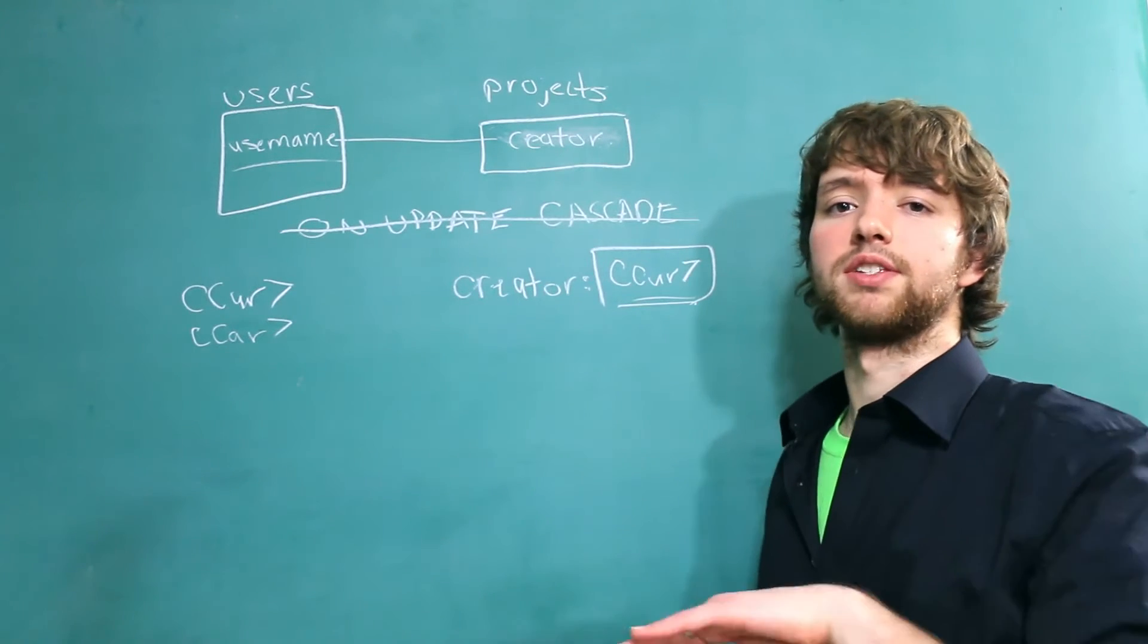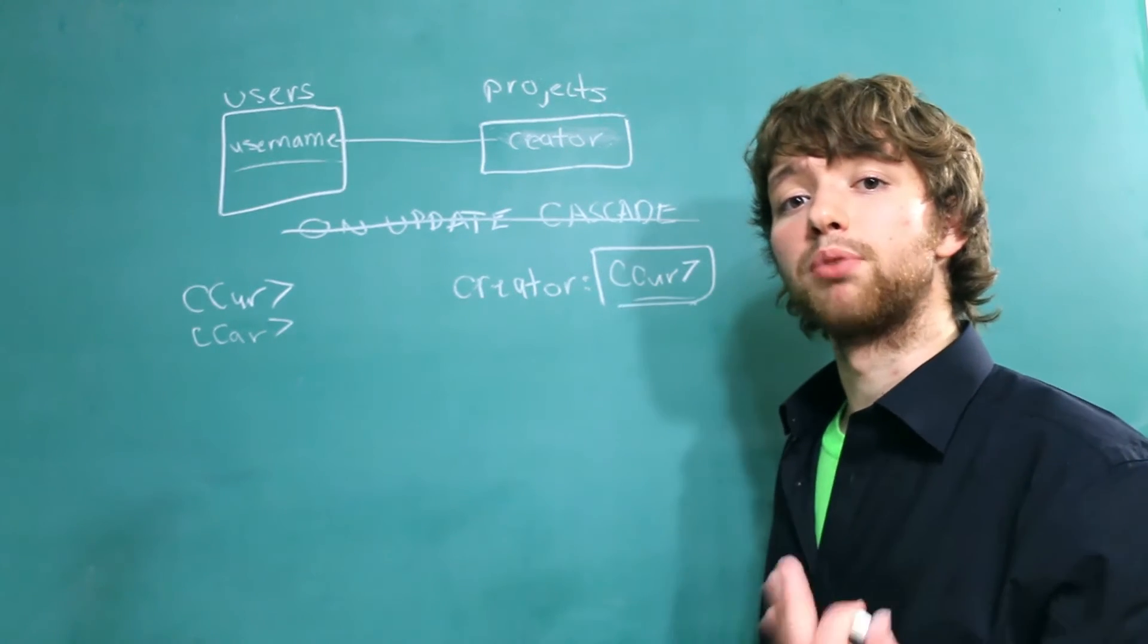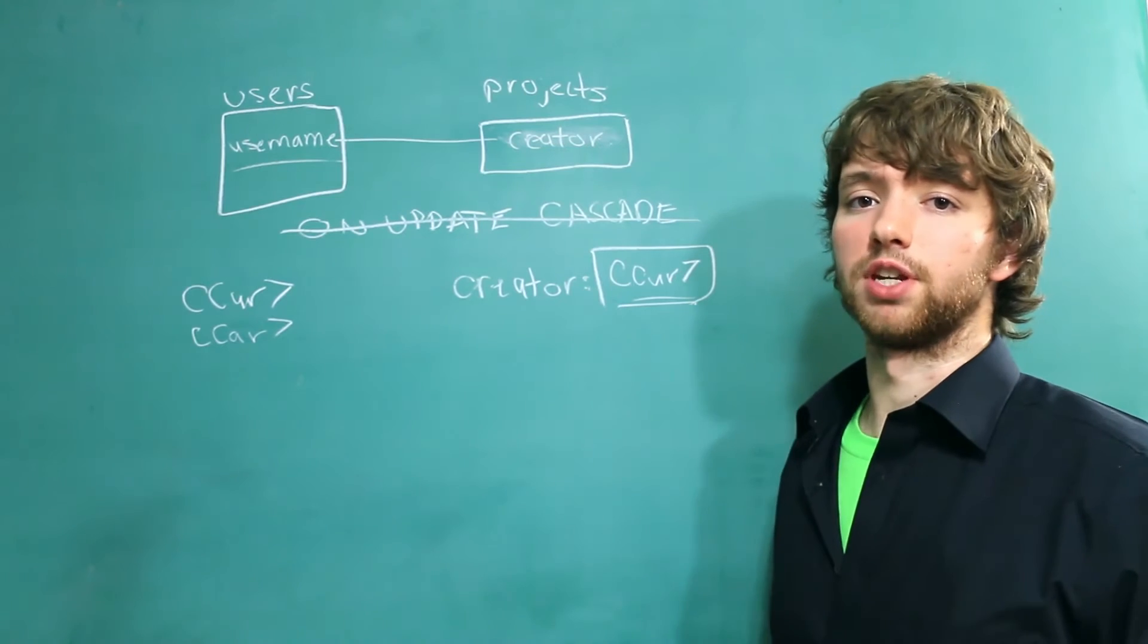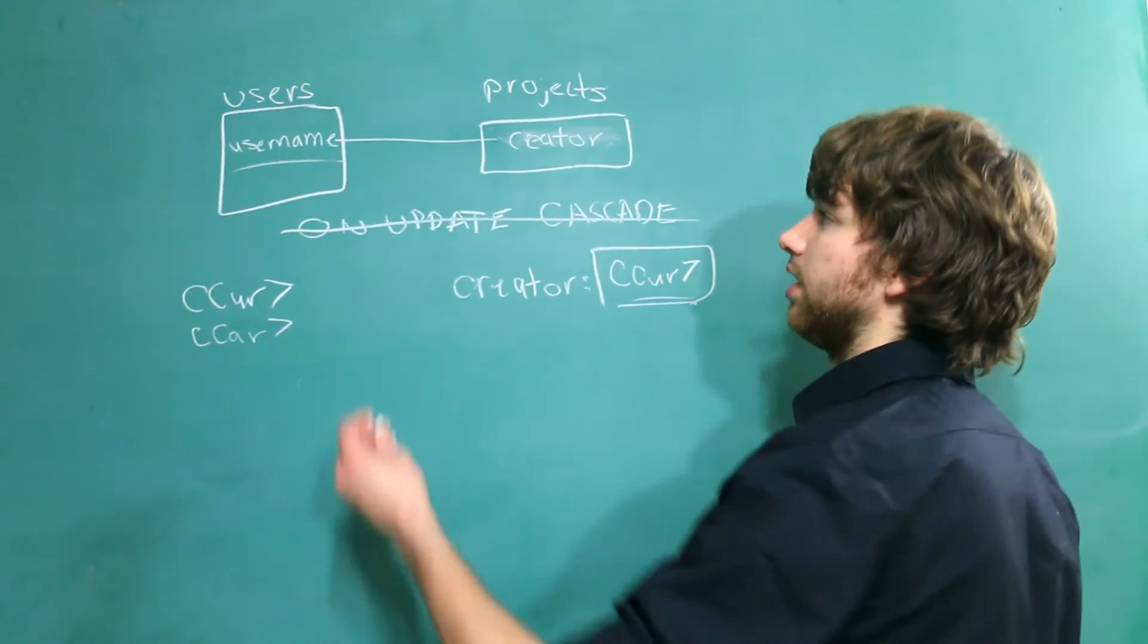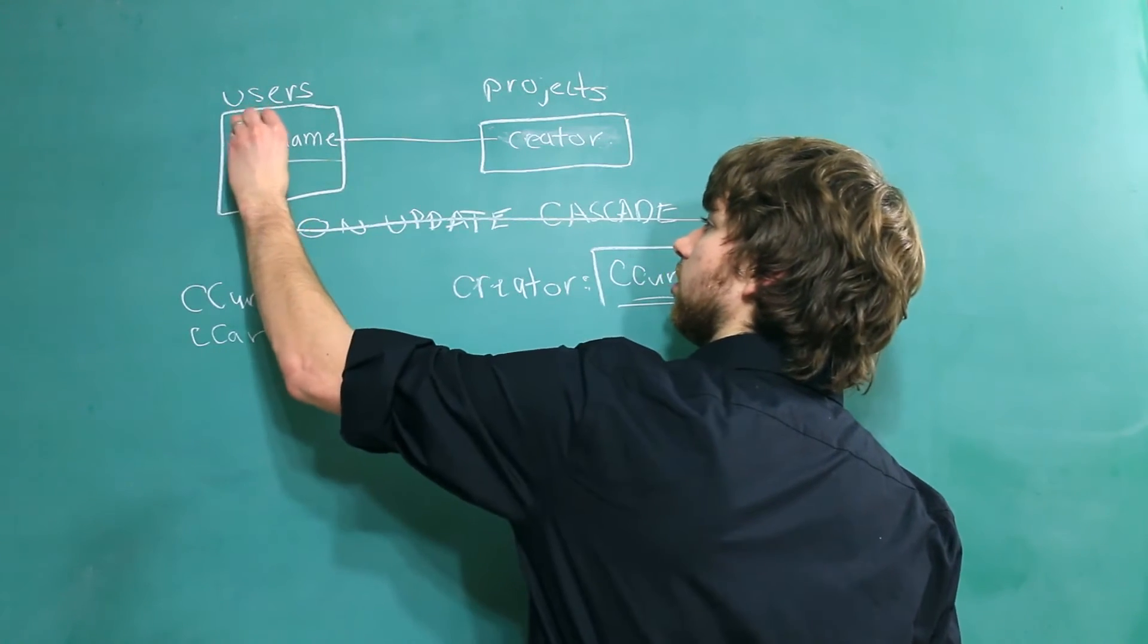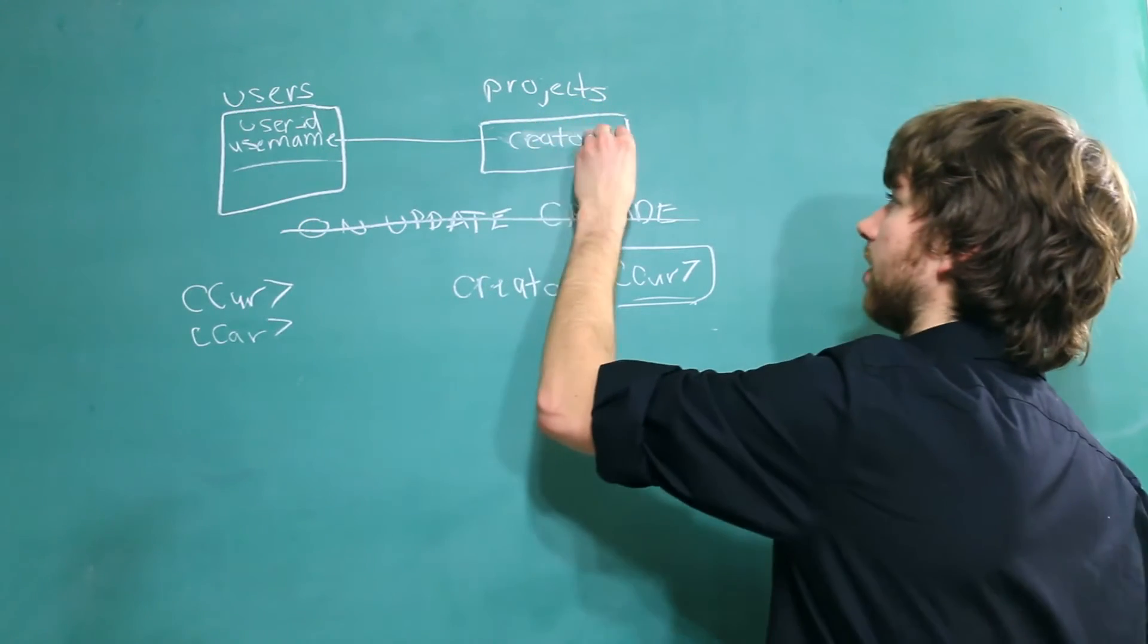That's why a lot of people lean on the side of using surrogate primary keys, and only referencing those with foreign keys. So if we wanted to do that, all we would need to do is have a user ID. And instead of having a creator, we'd have a creator ID.